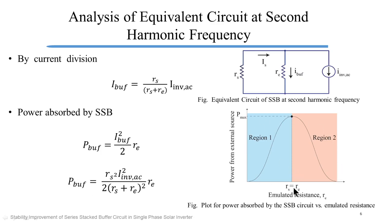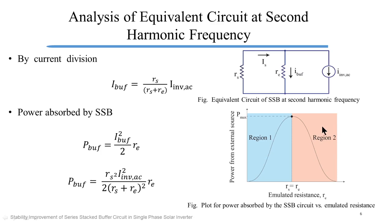We know that when RE is equal to RS, the power absorbed by the SSB circuit from the external source is maximum, and it reduces on both sides. We are dividing this region into region 1, where RE is less than RS, and region 2, where RE is greater than RS.